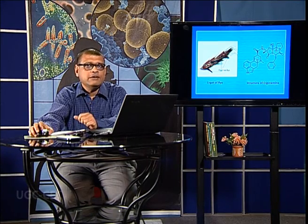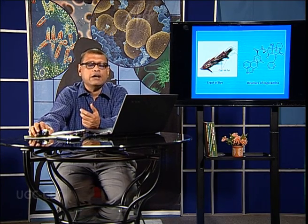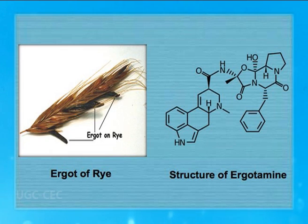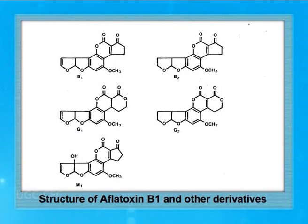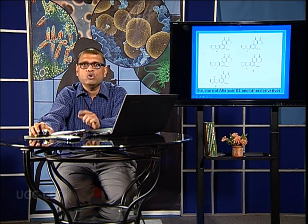The next group is fungi. Fungi growing on different food materials can produce different toxins. One such toxin is ergotamine, produced by the ergot fungus Claviceps purpurea, which causes contraction of the smooth muscle of the uterus and may cause abortion in pregnant women and cattle. There is also Aspergillus flavus producing the dreadful aflatoxin B1 and other derivatives like G1, G2, etc., causing severe cancer. Aflatoxin is a potent carcinogen coming through foodborne sources.